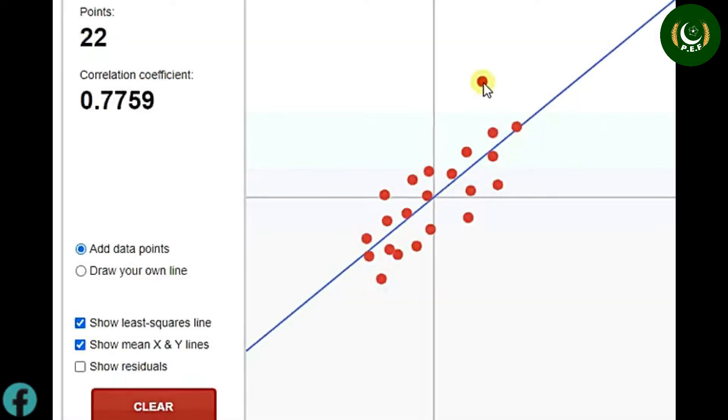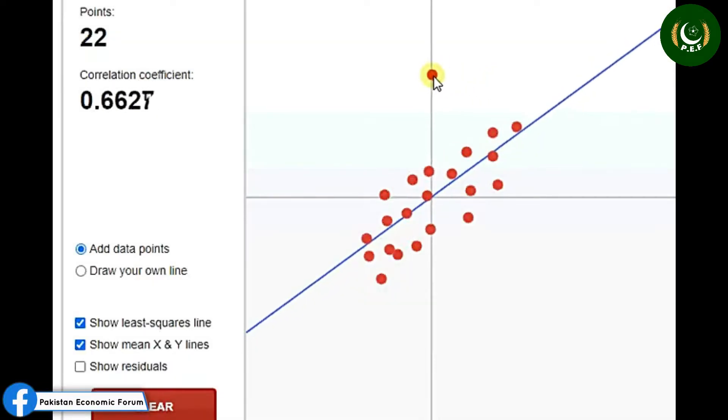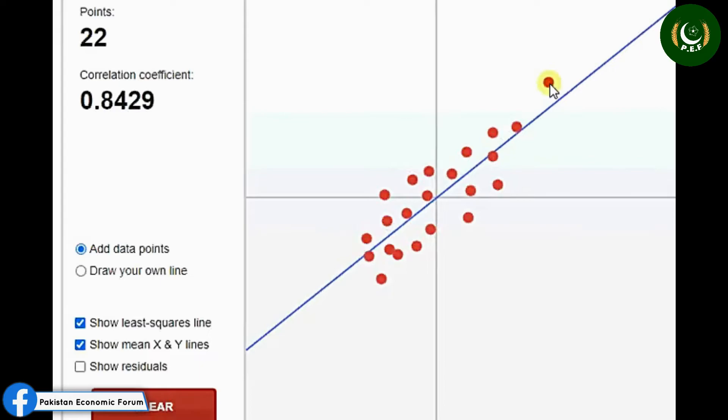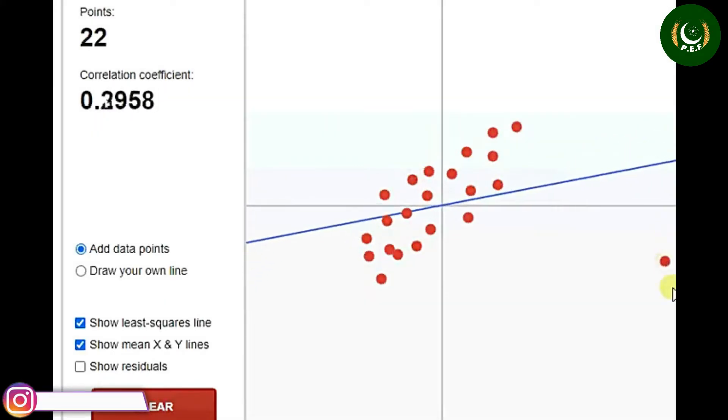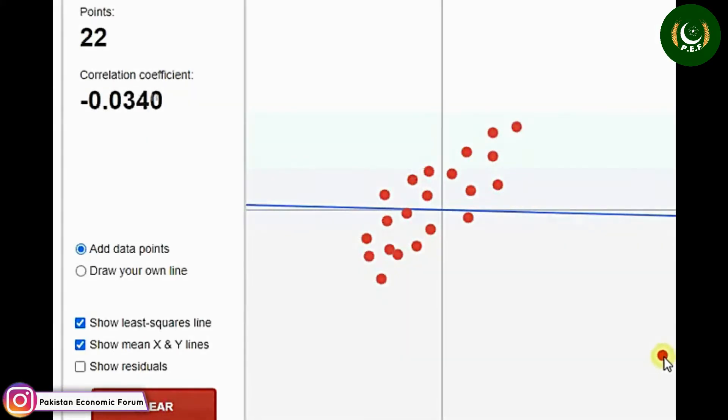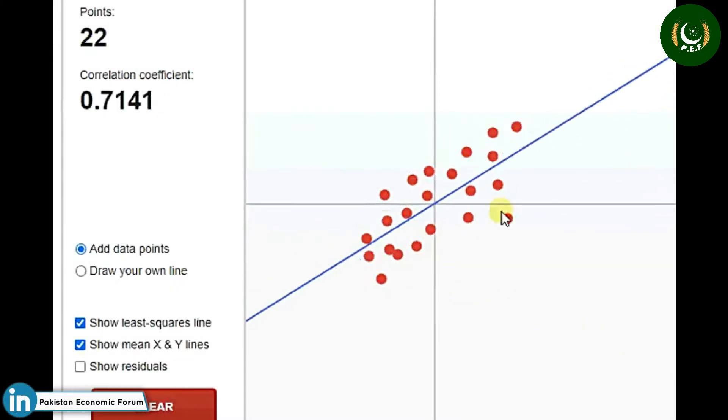If outlier is in y-axis, it's not going to change the line very much. But if outlier is in x-axis, you have a very large value of x, so this makes the line a bad fit. Single value is making the whole difference.